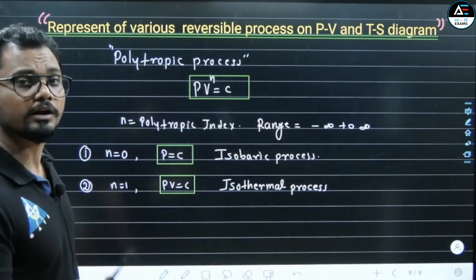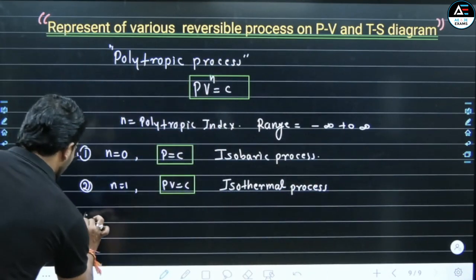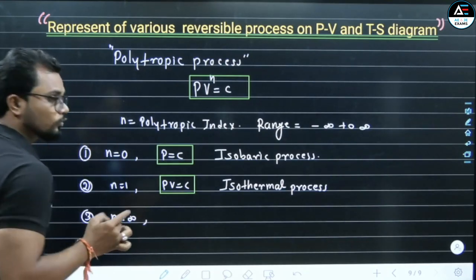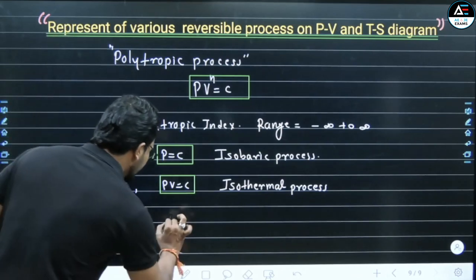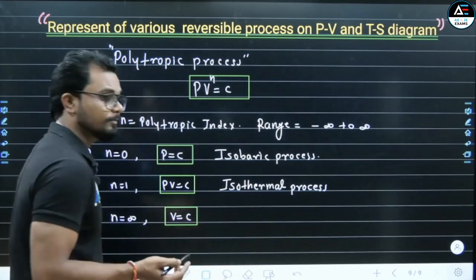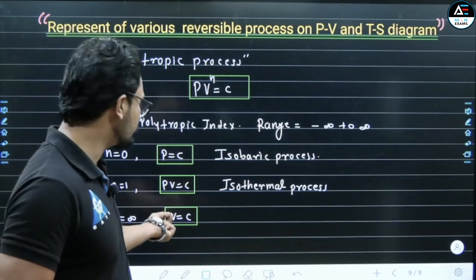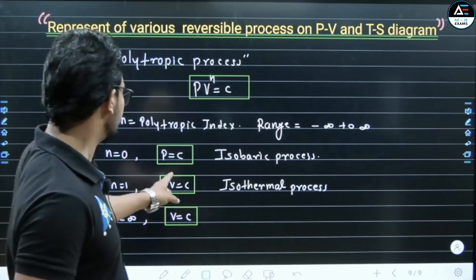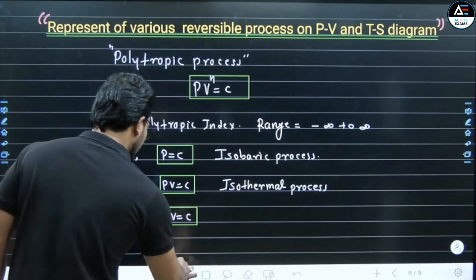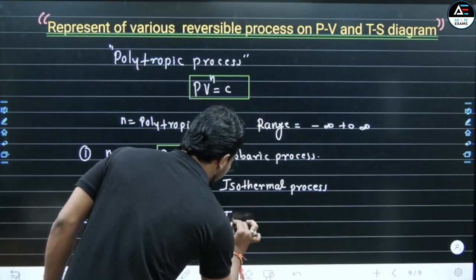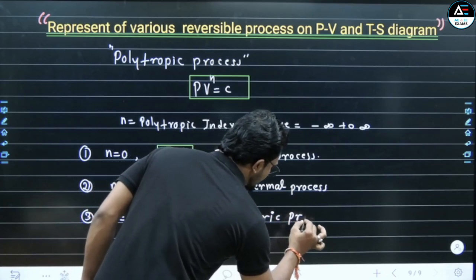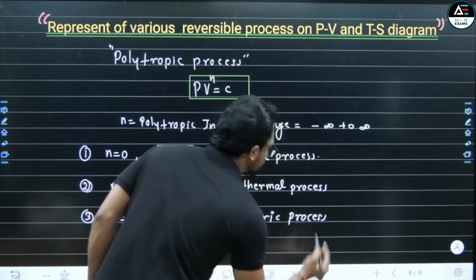Now put N = infinity. In the third condition, when N = infinity is substituted, the equation we get is V = C — that means isochoric process, constant volume process. When N = infinity, we get V = constant. So we write here: isochoric process. Is it clear?